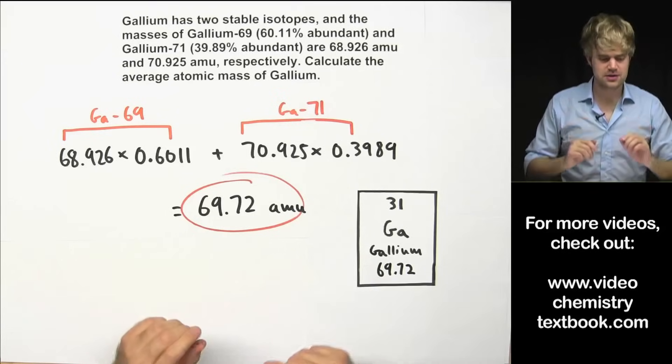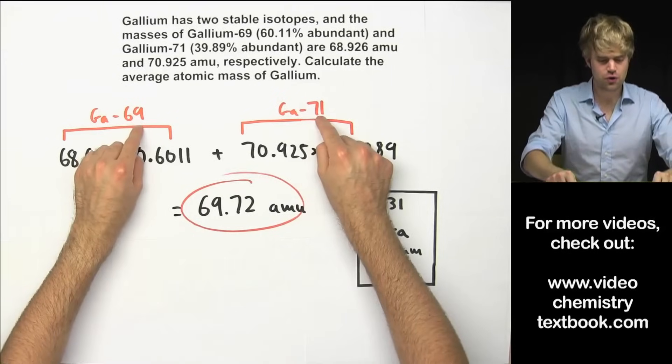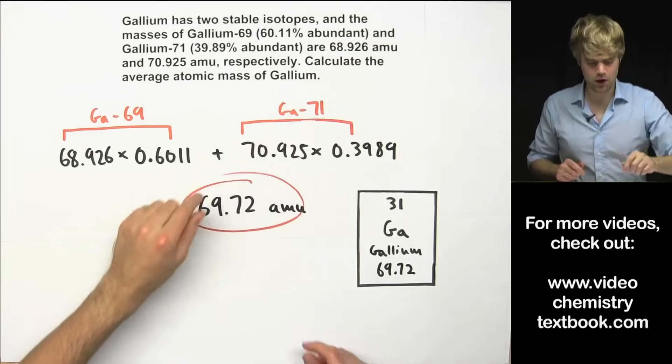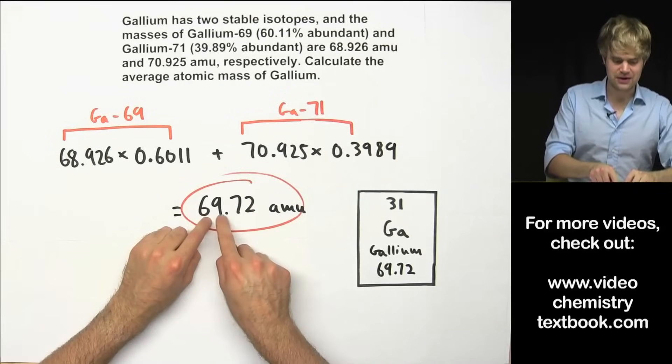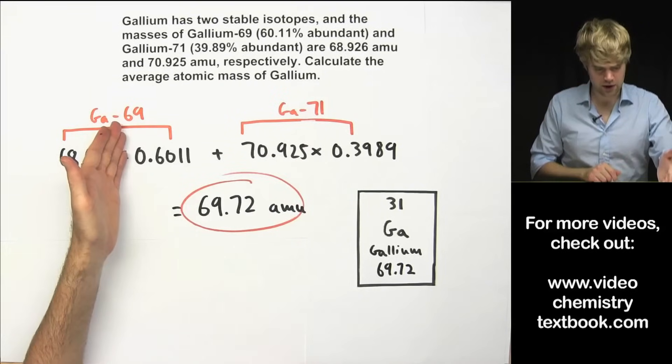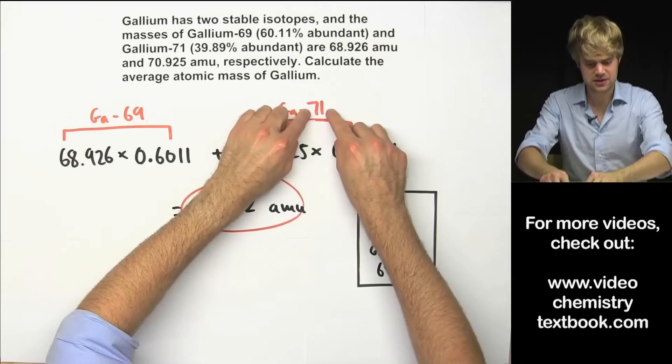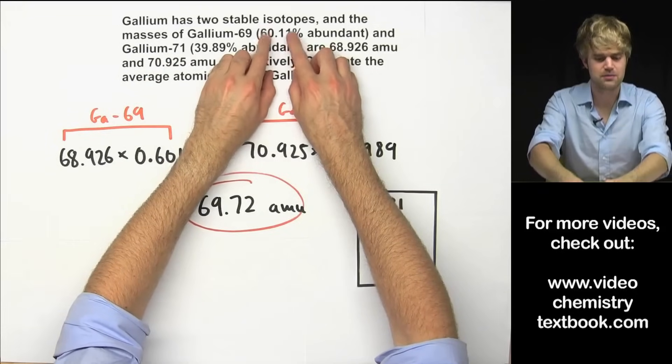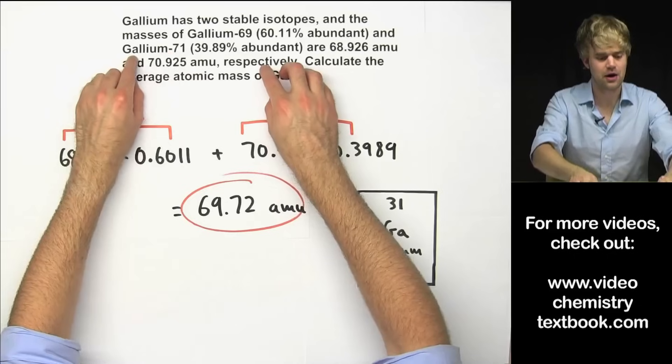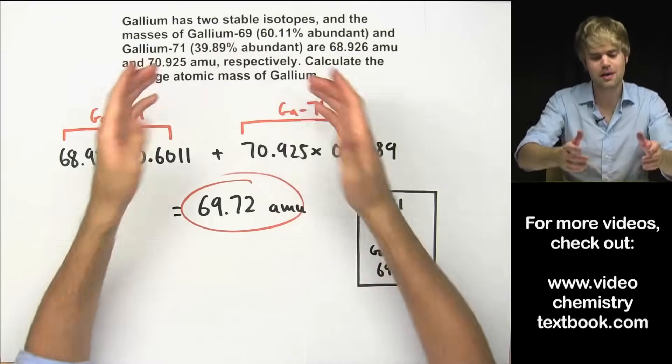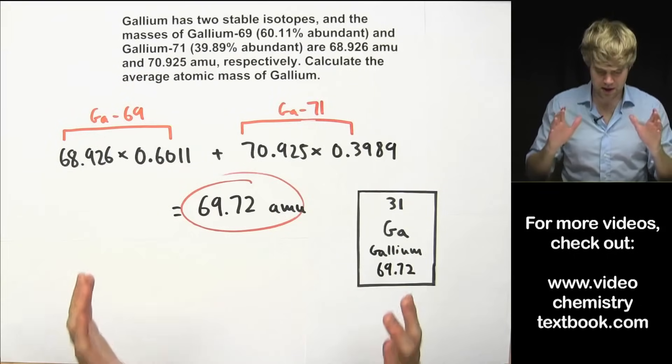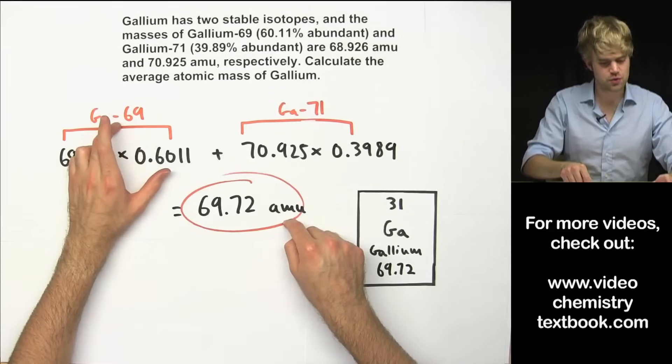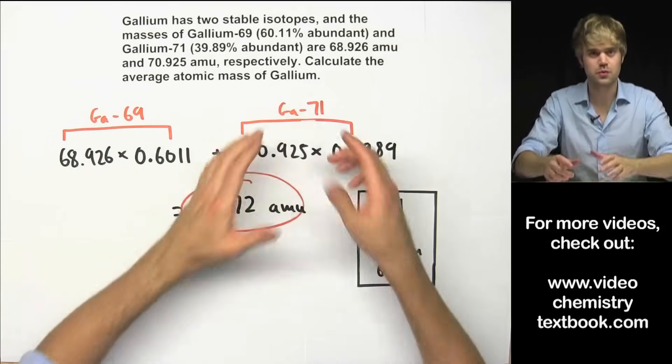Now very quickly check this out. We have two isotopes of gallium. One weighs about 69, the other weighs about 71, and the mass is closer to 69 than it is to 71. And that makes sense because there is more gallium-69, 60%, as compared to gallium-71 which is only about 40% abundant, so it makes sense that our weighted average should be closer to this one that's more abundant than to this one which we don't have as much of.